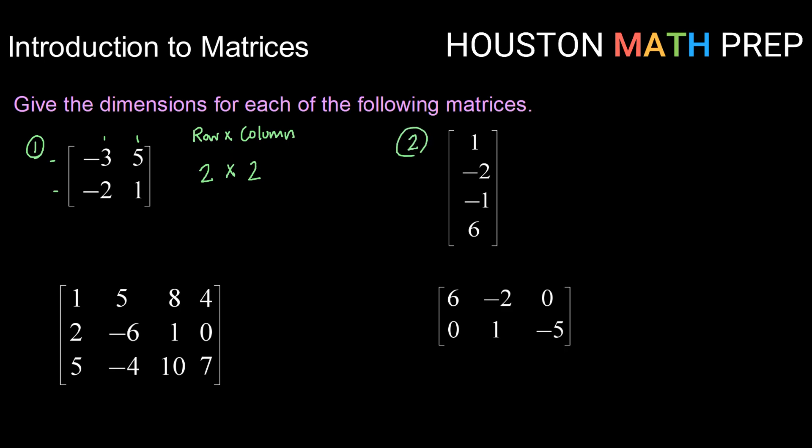Moving on to our next one, example two, this long, tall matrix here, let's give its dimensions. First we count up the number of rows: one, two, three, four rows. So it is a four by, then we count up the number of columns. I only have one column. This is what we call a four by one matrix.